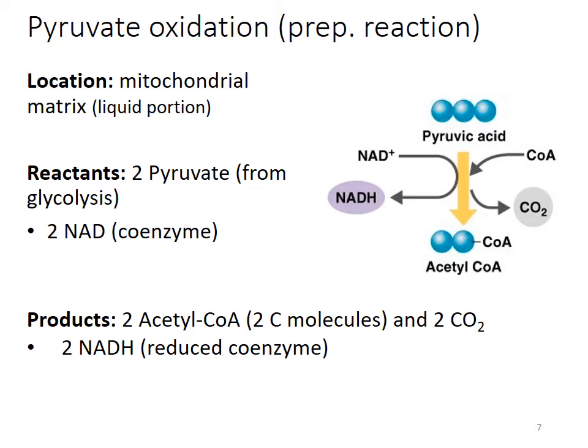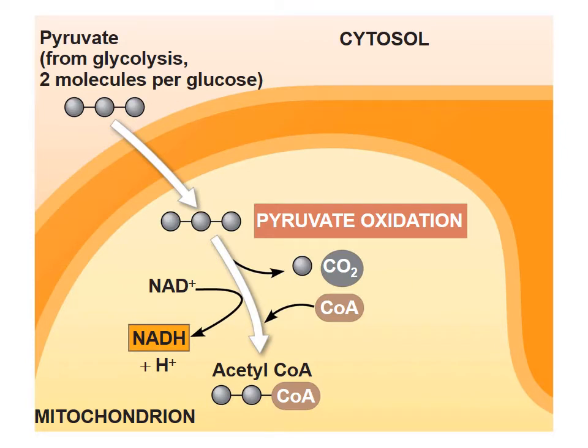As shown in the image, pyruvic acid goes in, acetyl coenzyme A goes out, and we also produce NADH which we'll use later. This is one of the areas where we produce the carbon dioxide that we ultimately breathe out. Pyruvate — two three-carbon molecules from glycolysis — goes into the mitochondria matrix, and in pyruvate oxidation we get acetyl coenzyme A, carbon dioxide, and NADH.